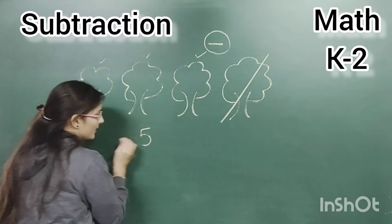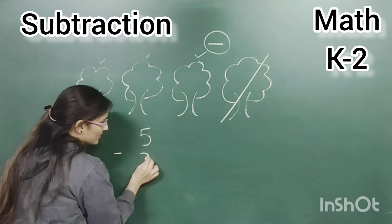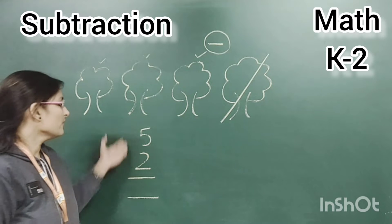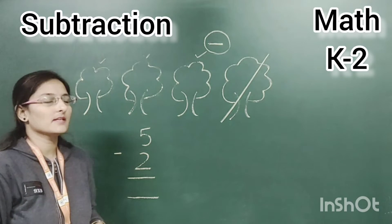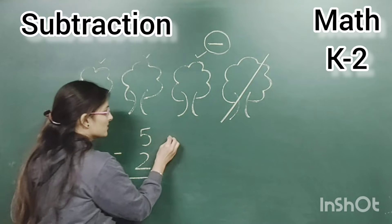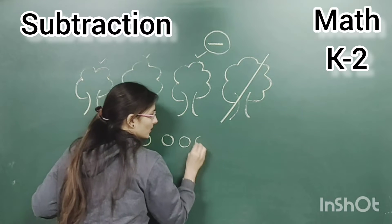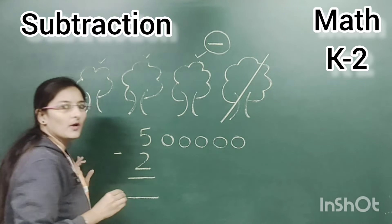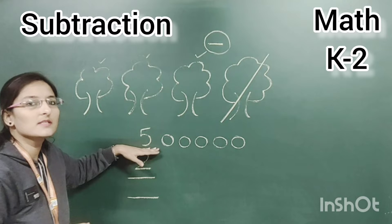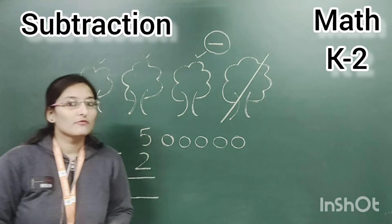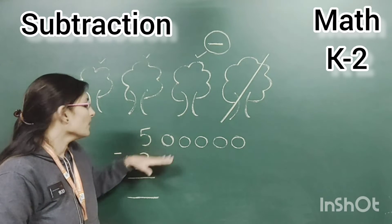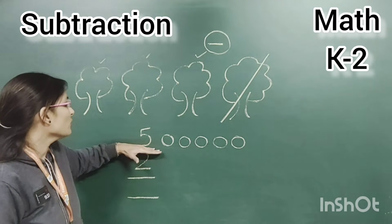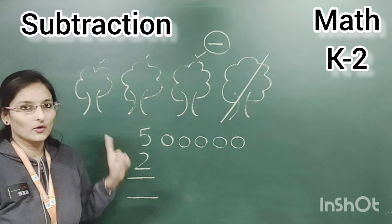See here: five minus two. Now we have to apply the rules. How can we solve this given sum? We will make balls. One, two, three, four, five. How many balls have we made here? Five. Because the given first number is five. In addition we make balls on both numbers, but here in subtraction we only make balls on the big number — the first number.